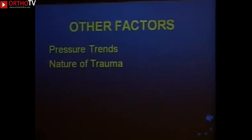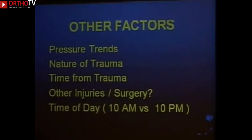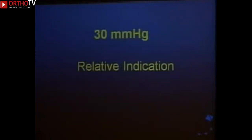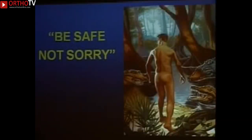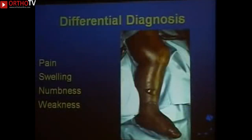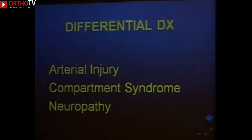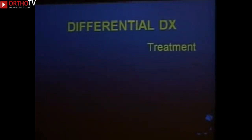Other factors include pressure trends — are they going up or down — nature of the trauma, time from injury, other injuries, and time of day. For example, a cooperative adult with a tibia fracture, nerves starting to fail, pressure at 25 mmHg: you can watch, but at 10 o'clock at night you'll probably go to surgery. Thirty is a relative indication — be safe, not sorry. The differential diagnosis for a swollen, painful, numb, weak limb is essentially three things: arterial injury, compartment syndrome, and neuropathy (usually neuropraxia from the fracture).